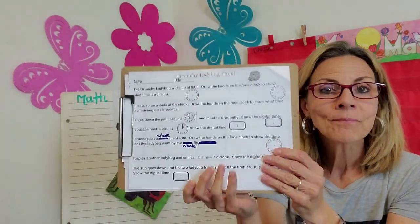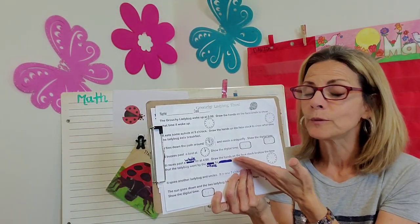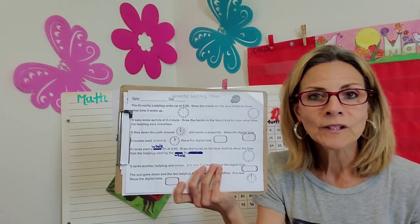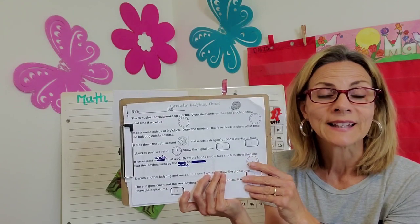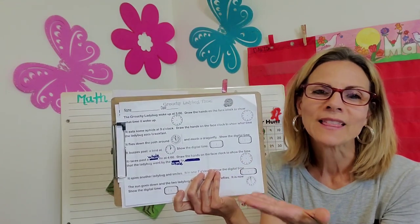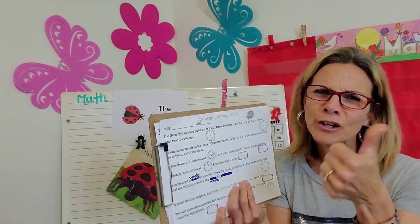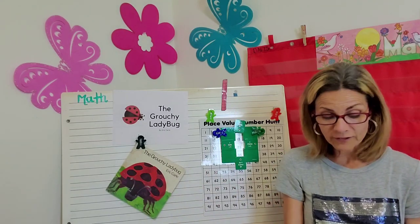So, again, I'll send this in email or on our Blooms app and if you can print it, great. If not, just be a problem solver and draw your little clocks in and you can complete this time story. You can do it. Okay, final activity.